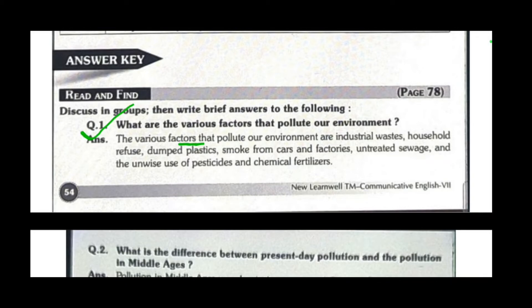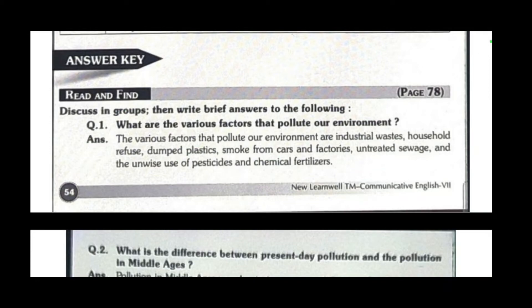The first question is: what are the various factors that pollute our environment? The various factors that pollute our environment are industrial waste, household refuse, dumped plastic, smoke from cars and factories, untreated sewage, and the unwise use of pesticides and chemical fertilizers.